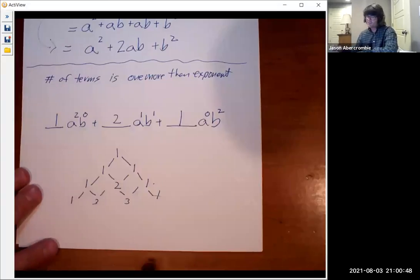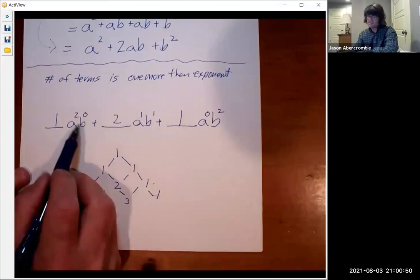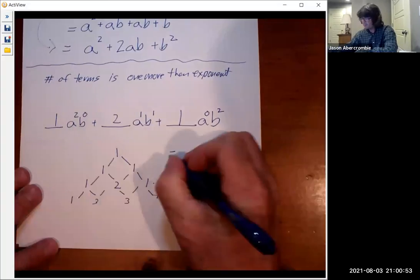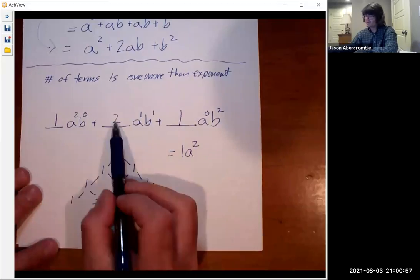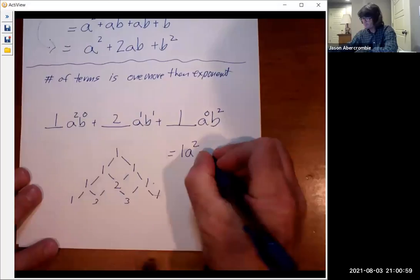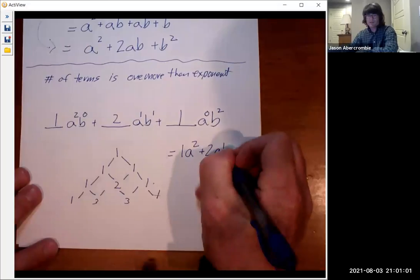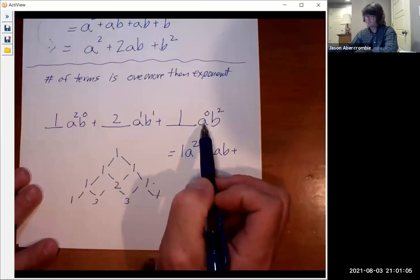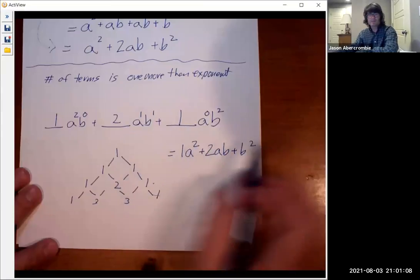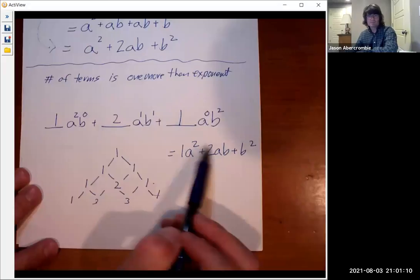And then you can just kind of see, well, b⁰ is one. That is really 1a². This is plus 2ab. And this is plus one. That's really a⁰ is really one. So this is really plus b². And that is what we got up here. 1a² plus 2ab plus b².